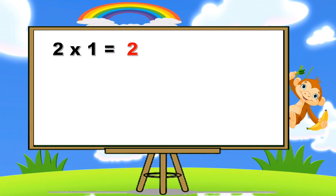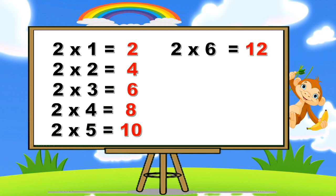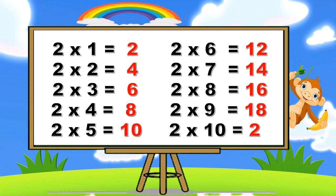2 ones are 2, 2 twos are 4, 2 threes are 6, 2 fours are 8, 2 fives are 10, 2 sixes are 12, 2 sevens are 14, 2 eights are 16, 2 nines are 18. Two tens are twenty.